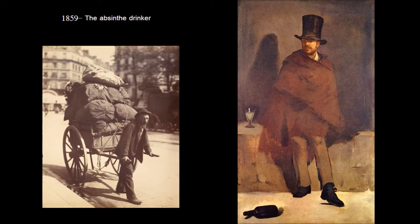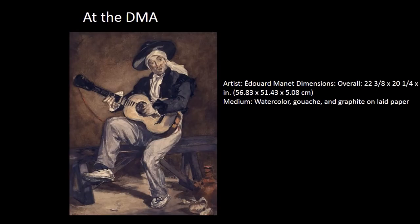From 1859 we have the Absinthe Drinker. In the early work by Manet, he is influenced by Gustave Courbet, projecting what we think of as the lower class. The Absinthe Drinker depicts a rag picker from the local area — a person very much like someone today who goes through garbage pulling out aluminum cans. Back then they were known for going through garbage and pulling out finer things to resell them. This is the kind of vantage point we see from Manet.